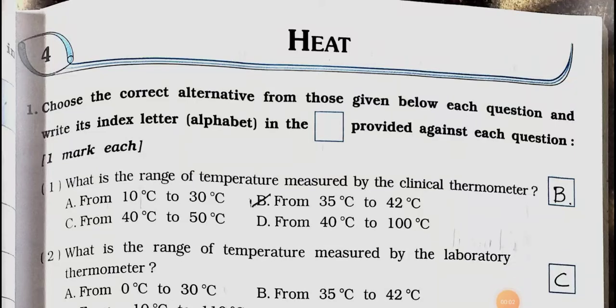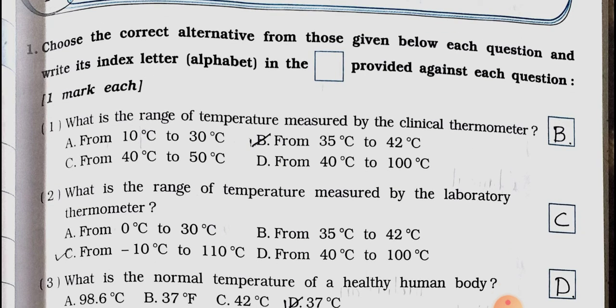Hello students, how are you all? I hope you all are fine at your home. Today we will see Standard 7, Subject Science, Chapter Number 4, Heat. Main 1: Choose the correct alternative from those given below each question and write its index letter alphabet in the box provided against each question. One mark each.